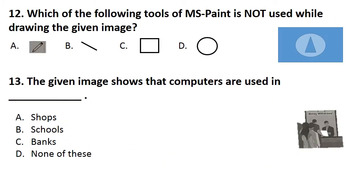Which of the following tools of MS Paint is not used while drawing the given image? Pencil tool is used to draw freehand in MS Paint, and there is no freehand drawing in the image given in the question. So the correct answer is option A.